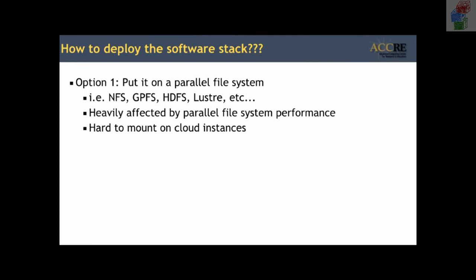Classically there are two general options. One is to put it on a parallel file system — NFS, GPFS, HDFS, Lustre. At Acre we use GPFS. The advantage is it's easy: you build the software, put it on the file system, and point users at it with no additional maintenance required in theory. The downside is it's heavily affected by parallel file system performance — write contention, nodes leaving the cluster. Additionally, it's hard to mount on cloud instances, and using a commercial GPFS file system in the cloud can be a non-starter due to security and licensing costs.